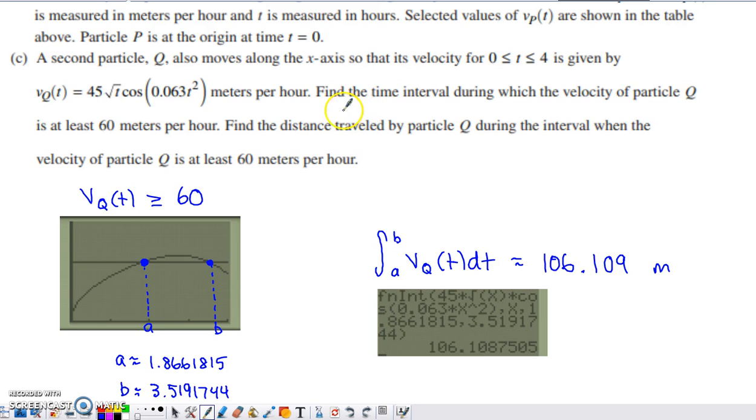Right away I read this sentence, find the time interval during which the velocity of particle Q is at least 60 meters per hour. I realized I could graph this velocity function, that's the graph that you see here, and I could graph y equals 60. I graphed those two things, and I saw on this stretch of the graph, my velocity function is definitely above 60. So I found the intersection between V sub Q of T and 60. I labeled the first intersection as A, and I took all the digits of accuracy that the calculator provided me because I realized I was going to do another computation with that number. I also found the intersection over here, defining that as point B along the x-axis, carrying all the digits of accuracy the calculator provided me.